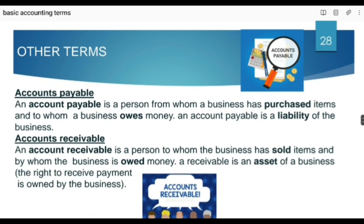Other terms: account payable is said to be those suppliers from whom we have purchased goods on credit — woh suppliers jinse hum ne udhaar pe cheezein kharidi hain aur jinhe hum ne future mein payment karni hai. These are said to be a liability of the business, named as accounts payable. And accounts receivable is exactly the opposite — these are the customers to whom goods are sold on credit. Un se business ne paisa receive karna hai, aur yeh receivable amount business ki books mein as an asset record ki jati hai. The right to receive payment is owned by the business.